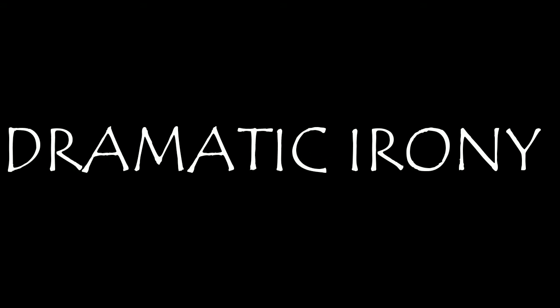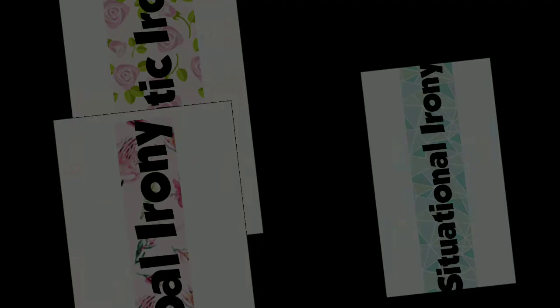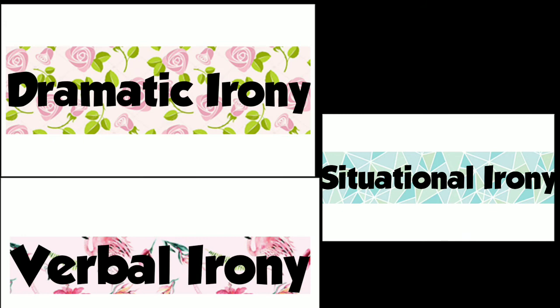Dramatic irony is that type of irony where the writer and the viewer or reader knows what is going to happen, but the characters in the book or play don't know. For example, in Romeo and Juliet, the viewers and readers knew that Juliet was acting dead but was actually not dead, but Romeo did not know this. So in dramatic irony, the characters don't know what is going to happen next, but the viewers or readers do.